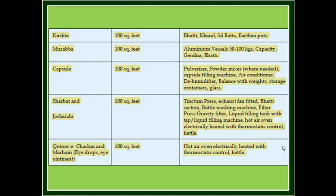Category 6: Capsule. Space required: 100 square feet. Recommended equipment: pulverizer, powder mixer, capsule filling machine, air conditioner, dehumidifier, balance, etc.